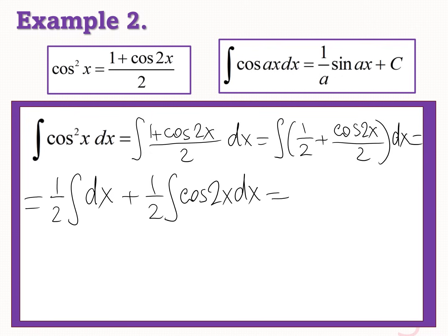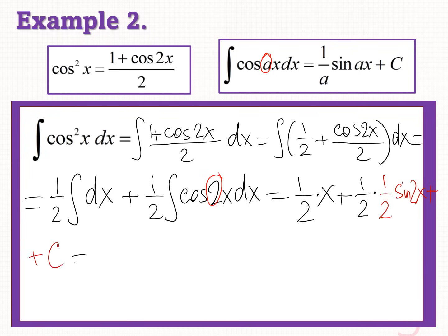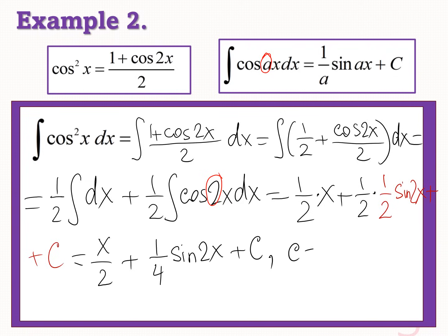Now it gives (1/2)x plus, using the formula where A equals 2, we keep 1/2 times (1/2)sin2x plus C. Simplifying, the answer is x/2 plus (1/4)sin2x plus C, where C is an arbitrary constant. This is the correct answer for your quiz or test.